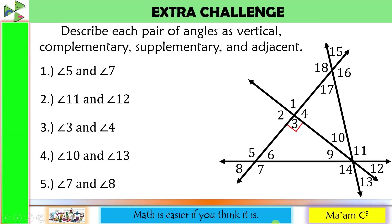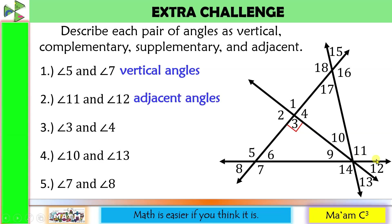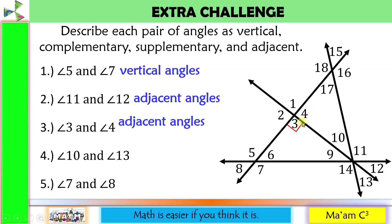Let us do an extra challenge. Describe each pair of angles as vertical, complementary, supplementary, or adjacent. Number 1, angle 5 and angle 7 — they are vertical angles. Number 2, angle 11 and angle 12 — they share a common ray, so they are adjacent angles. Number 3, angle 3 and angle 4 — they share a common side, so they are adjacent angles. This means the angle measures 90 degrees. If this is a straight line and this angle is 90 degrees, then the other is also 90 degrees. And since 90 plus 90 is 180, angle 3 and angle 4 are also supplementary angles.